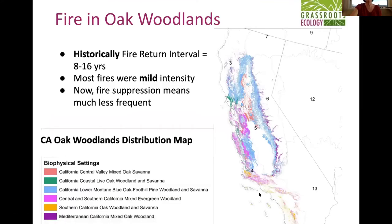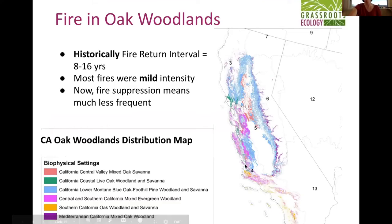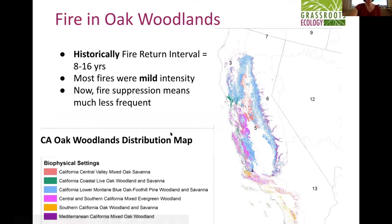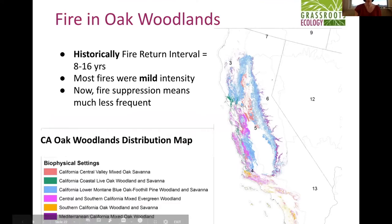Moving on to oak woodlands — these are really important species for wildlife, for people historically, and as keystone species generally. This map shows all the different types of oak woodlands in California, and you can see just how important and widespread that habitat type is, covering a wide range of areas.